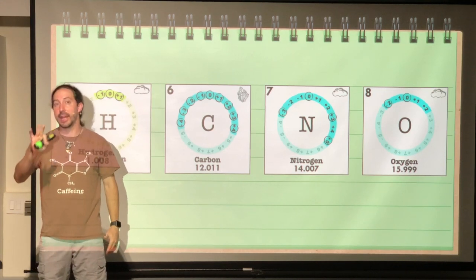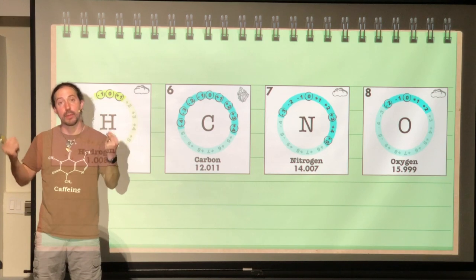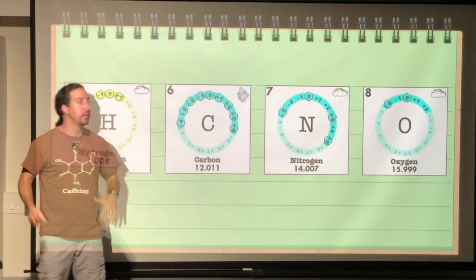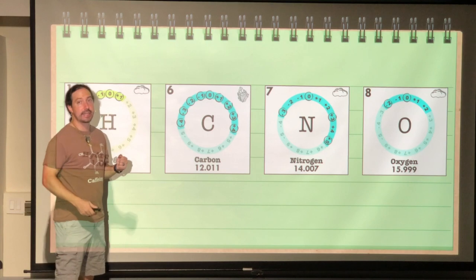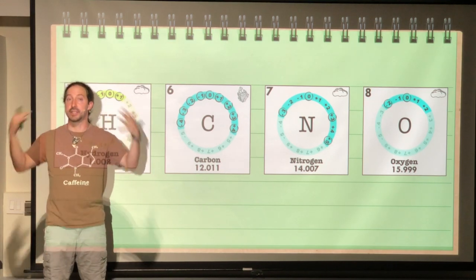Carbon, because remember they have to have an equal amount to balance out. Carbon has six protons, which also means it has six electrons.